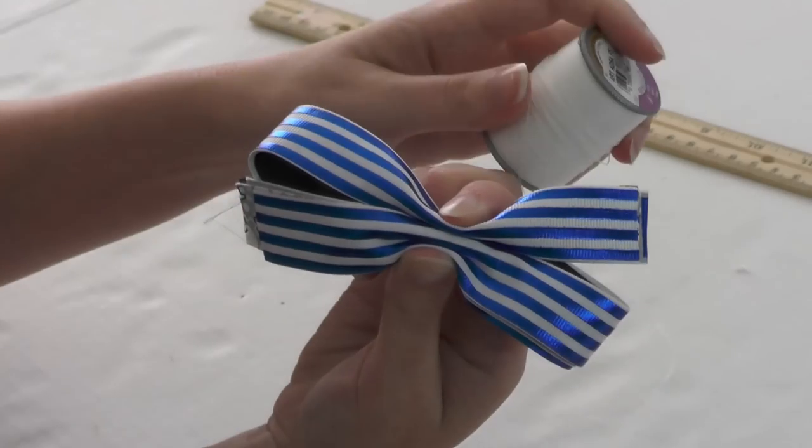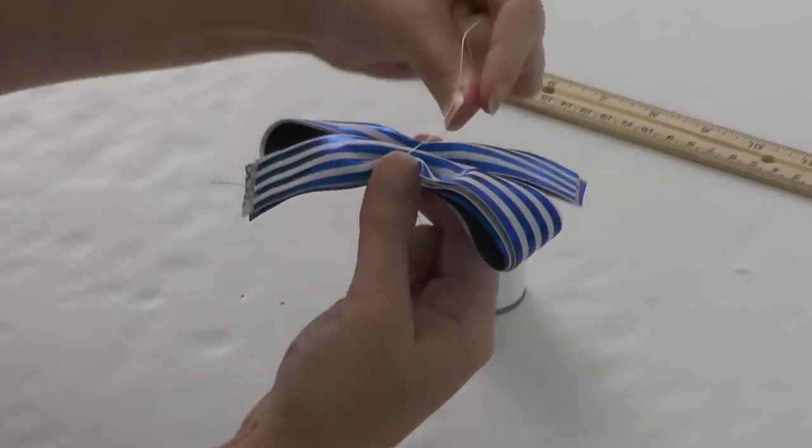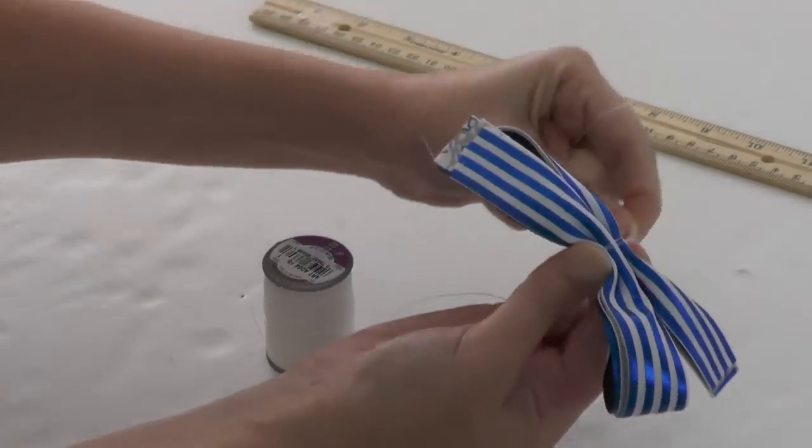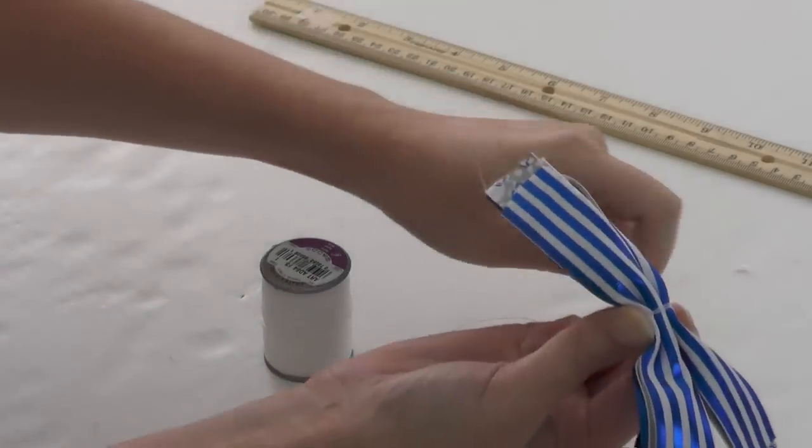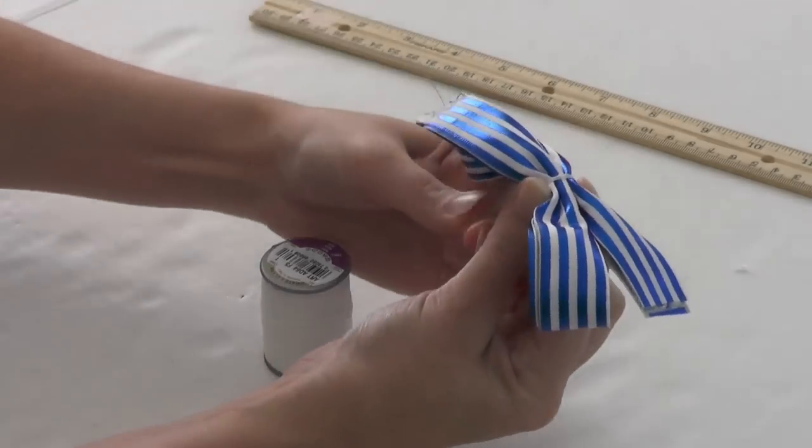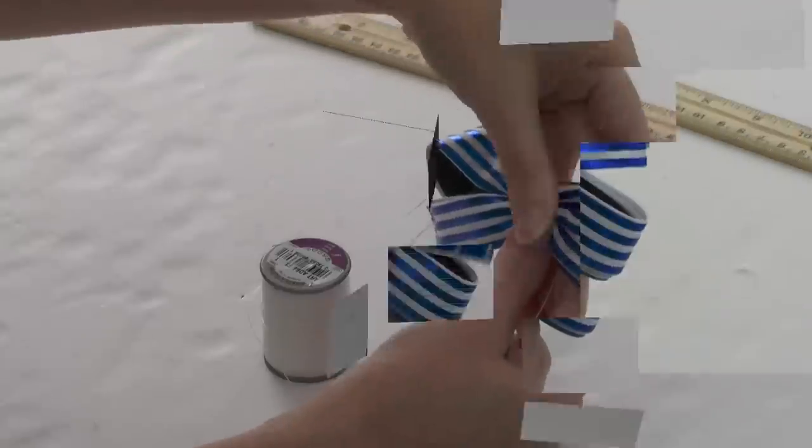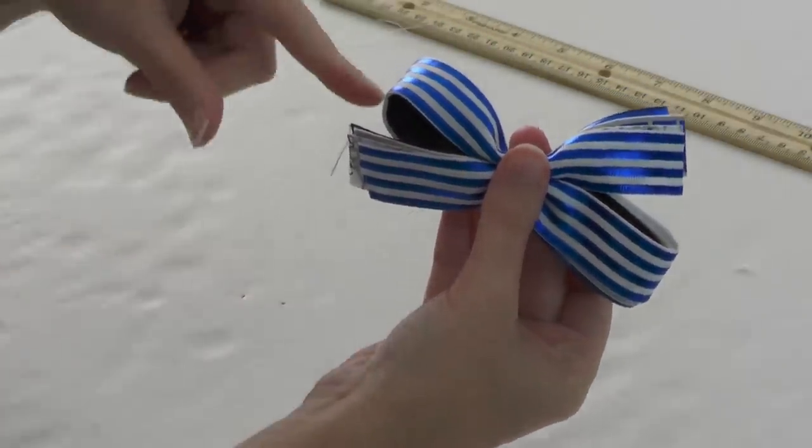But if you're working with a thin ribbon, it should be no problem. All right, there is my crease. I'm just going to grab my upholstery thread and secure it, and then we'll fan everything out and make sure it's all even before we trim up the ends and heat seal.